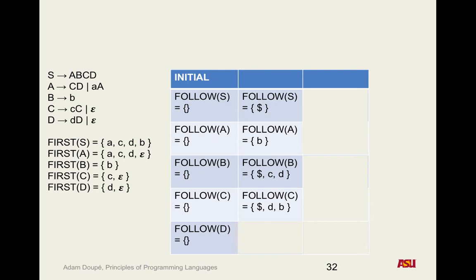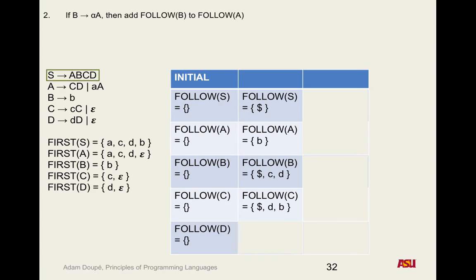For D: we look at each rule. In S goes to A, B, C, D — D is last, add follow(S). In A goes to C, D — D is last, add follow(A). In D goes to little d, big D — D is last, add follow(D) to follow(D), no change. Nothing after D in any of these, so rules four and five don't apply. So follow(D) = {$, little b}. The order of derivation is the order that we derived them from the rules — order within sets doesn't matter in general, but does matter on your homework.